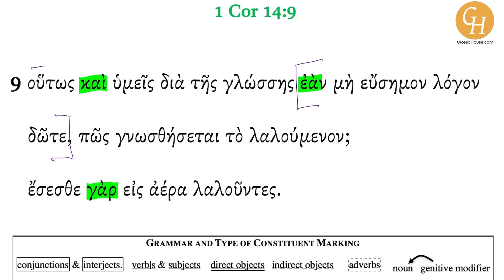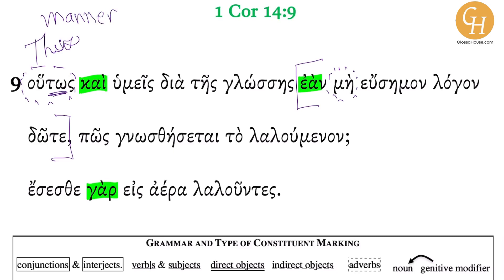Next I'm going to start to notice that there are some adverbs — houtos. I may not begin with adverbs but I'm going to do that now. I got a houtos, which means 'thus.' Now this is one that may almost function like a connector — in like ways. So houtos is marking manner. Thus also — really 'thus also.' So there's a comparison that's continuing from the previous context.